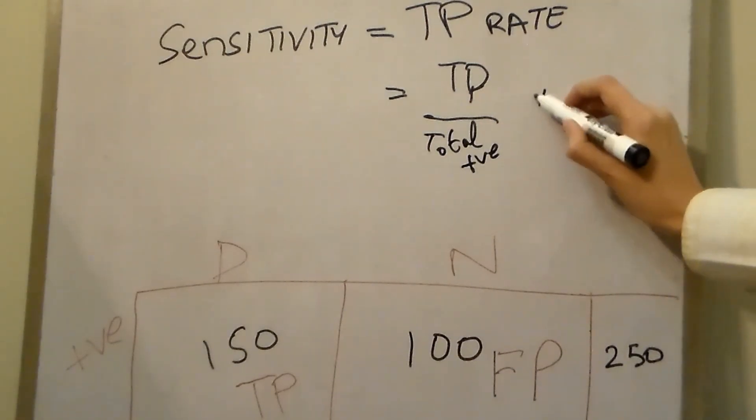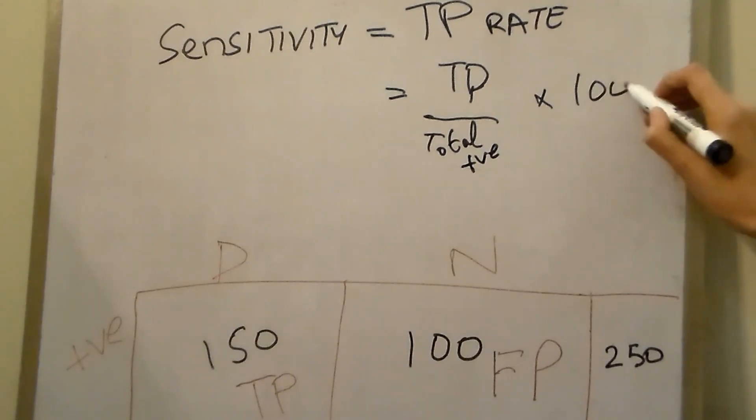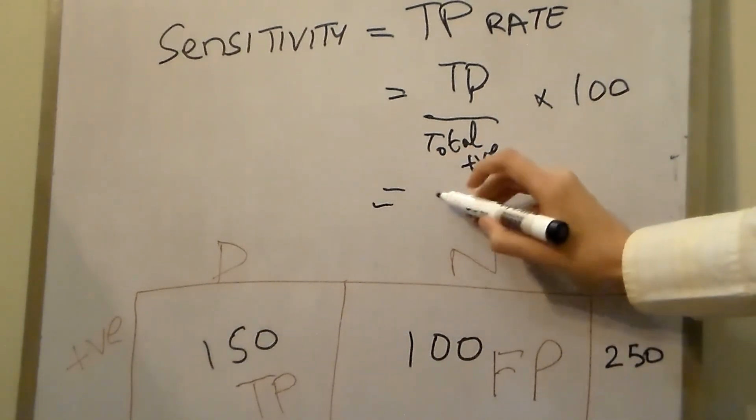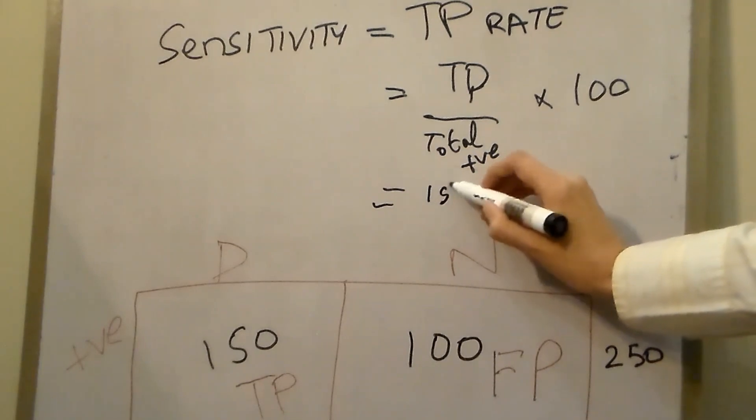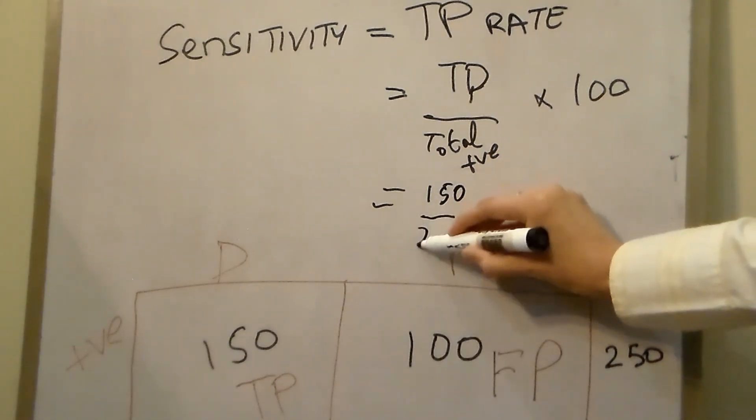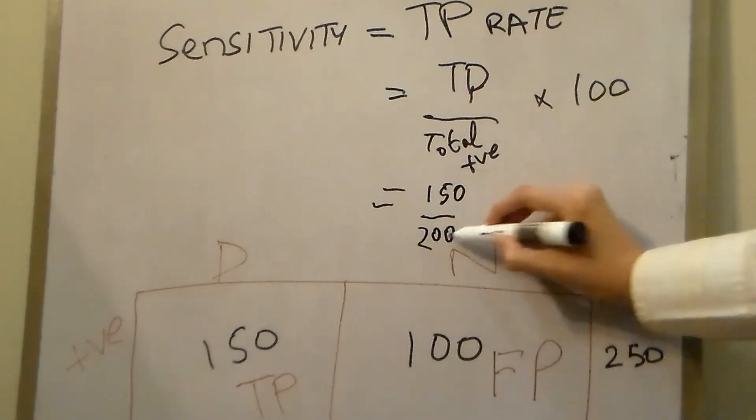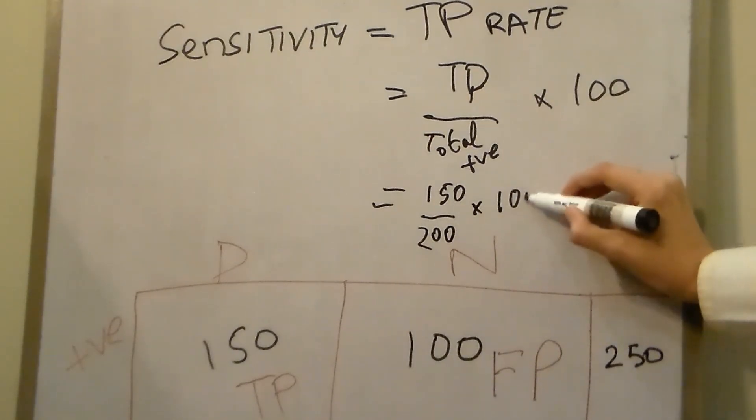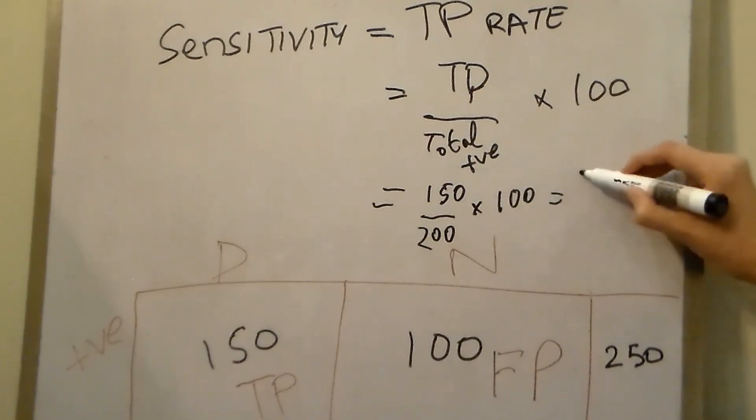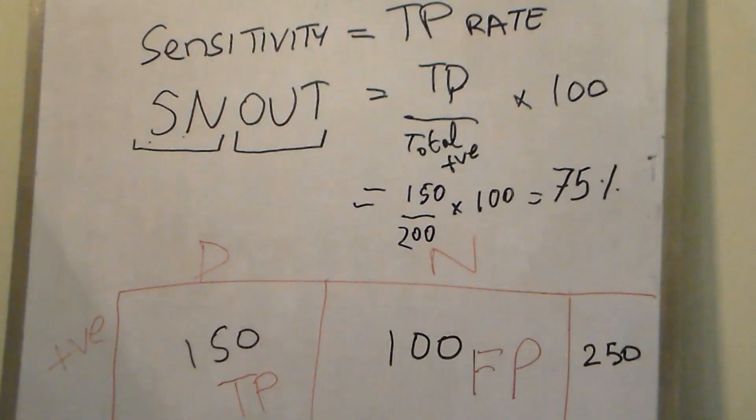So that's true positive upon total positive multiplied by 100. Putting in the values, it's 150 upon 200 multiplied by 100, which equals 75%. So the sensitivity of this test is 75%, which tells us how good the test is for screening.